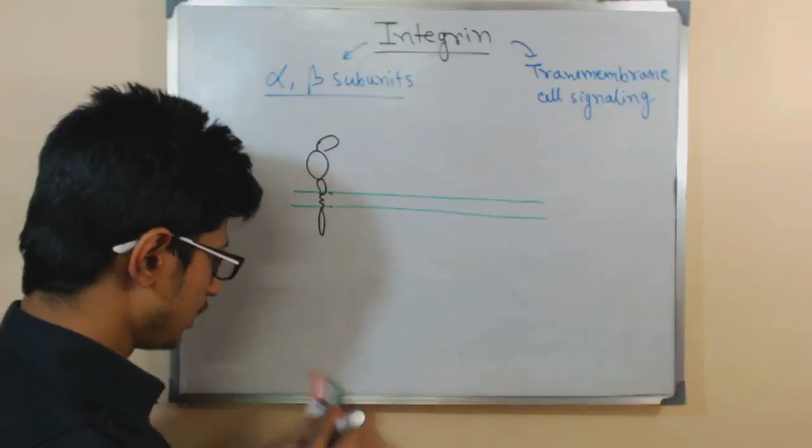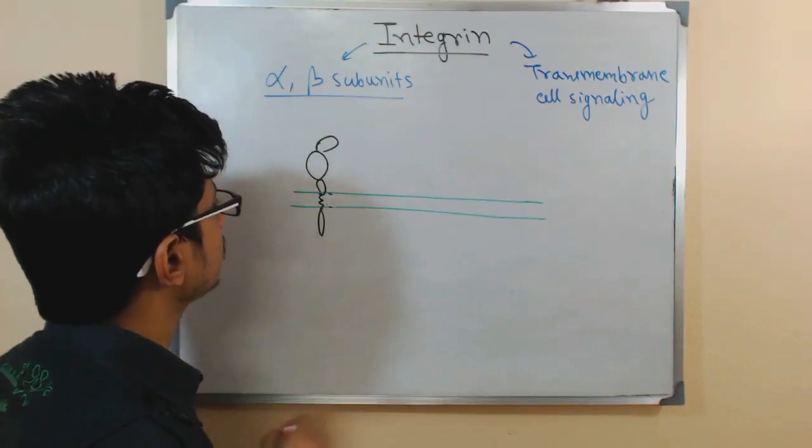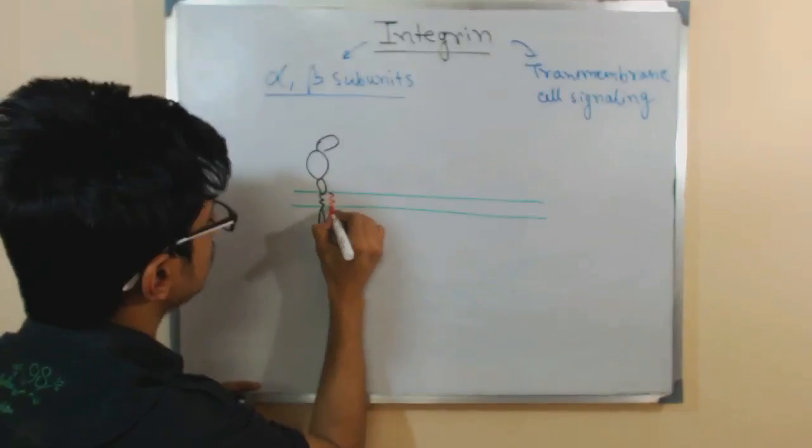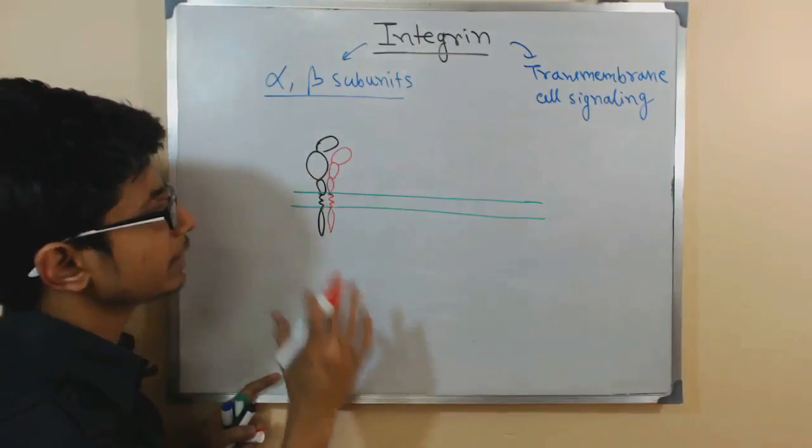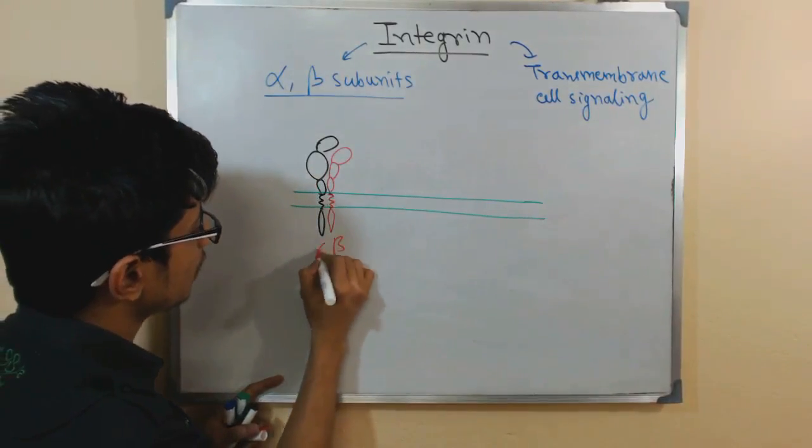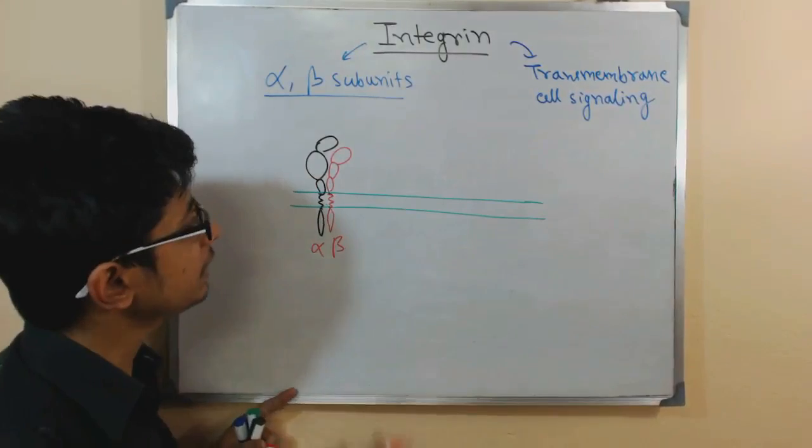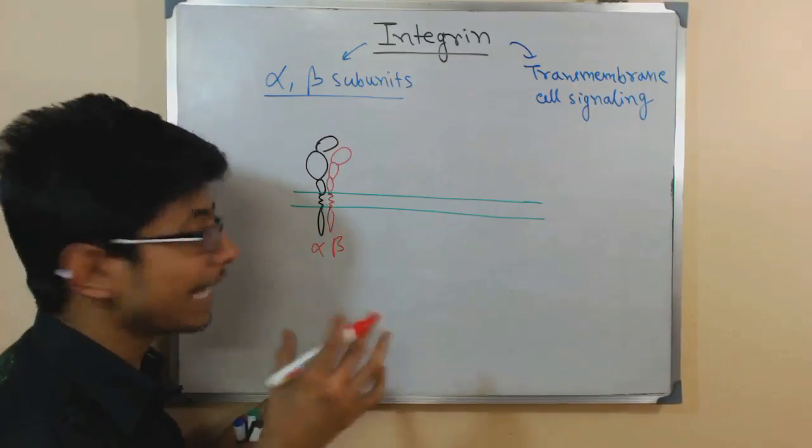Let us draw it with another color. Let us draw it with red color, the beta subunit and this is the beta subunit and so, this is the integrin, so alpha and beta, two different subunits of the integrin embedded into the cell membrane like that.